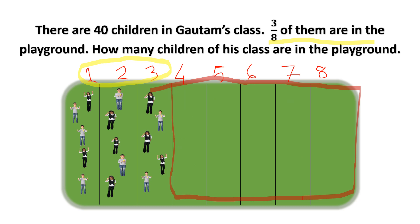Now can you count how many are there? 3 by 8 of 40 children — there are 5 in each group and there are 3 groups, so it should be 15. Let us count and see: 1, 2, 3, 4, 5, 6, 7, 8, 9, 10, 11, 12, 13, 14, 15. There are 15 children present in the playground and the rest are not there.